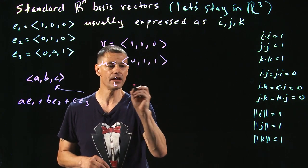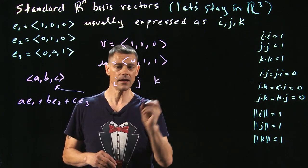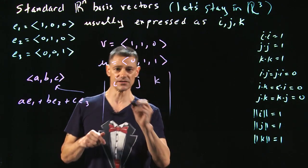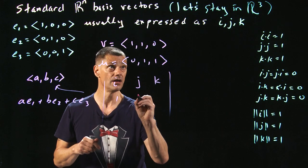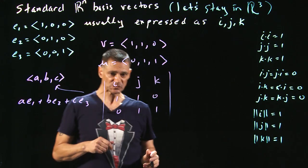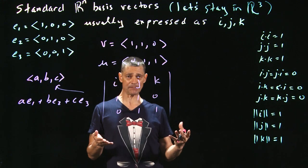How do you do a cross product? Well, you set it up like this. You do i, j, k, and you're going to take the determinant of this after you lay these vectors in here. So this is going to be 1, 1, 0, and 0, 1, 1. And then I'm going to do this expansion by minors.